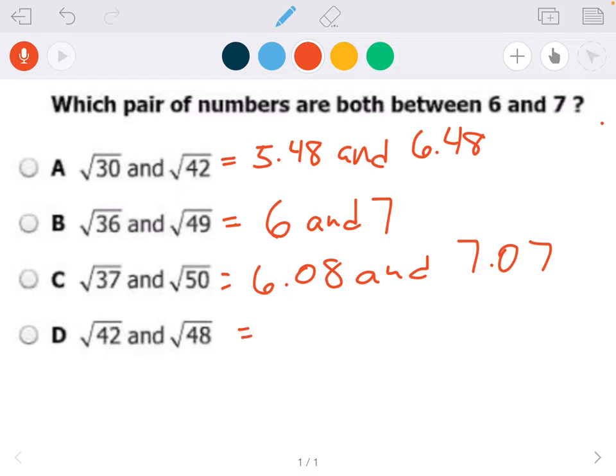And then lastly, the square root of 42 is 6.48, and the square root of 48 is 6.92.